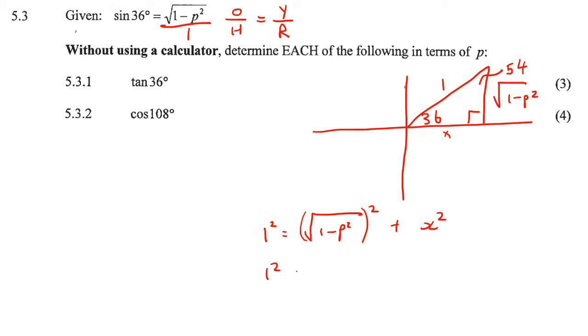And that means 1 squared is equal to 1 minus p squared, because this 2 just gets rid of the square root, plus x squared. And then if I had to get x squared alone, I'm going to end up with p squared, actually, because the 1's are going to cancel.